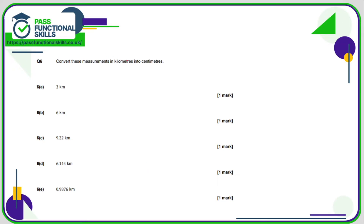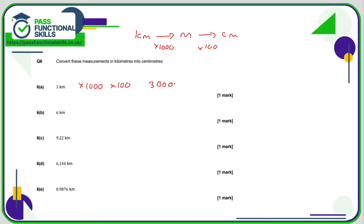Here we're converting kilometres into centimetres. You probably don't know how many centimetres there are in a kilometre, so just turn kilometres into metres by multiplying by 1000, then metres into centimetres by multiplying by 100. So three kilometres gives 300,000 centimetres, six kilometres is 600,000. The next answers are 922,000, 614,400, and 98,760.